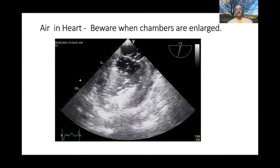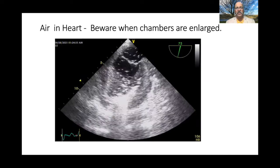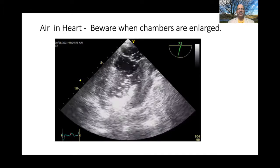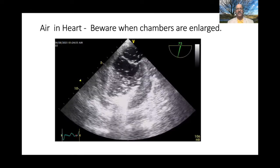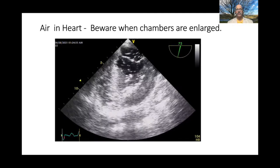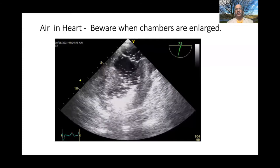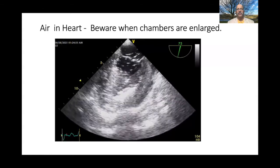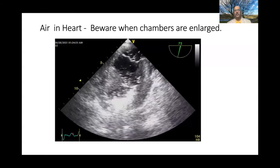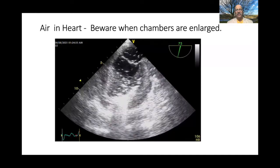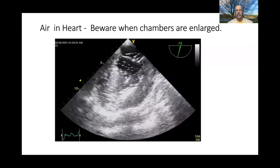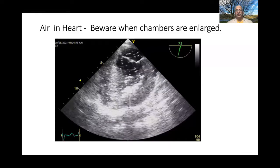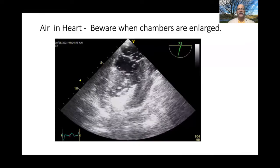Air in the heart is another very difficult thing to sort out, especially when there are large chambers like a large LA or large LV. Large LA can occur after mitral stenotic or mitral regurgitation procedures. Similarly, large LV of aortic regurgitation presents the same problem. Air gets stuck in the LV cavity because filling of the heart is not uniform, and I would highly encourage use of CO2 in this situation.